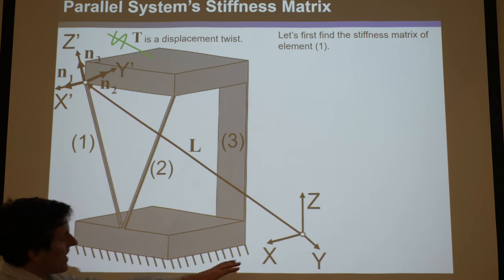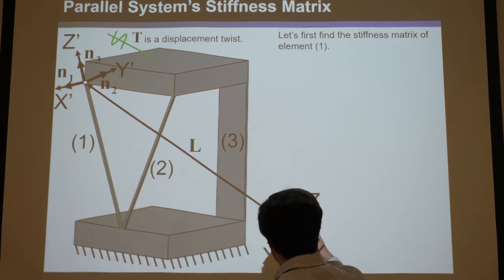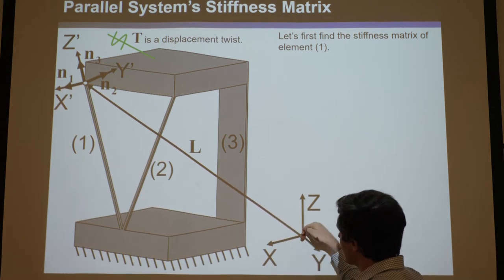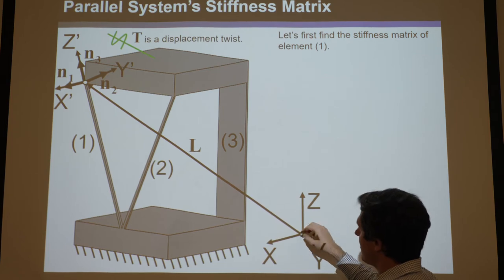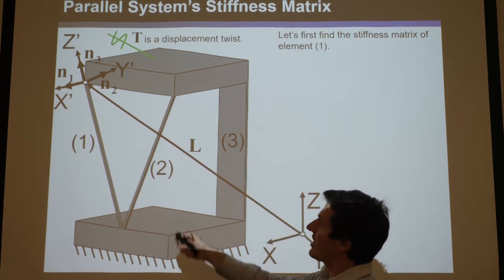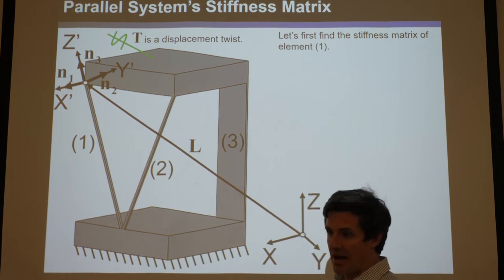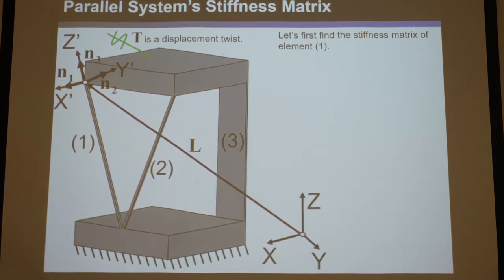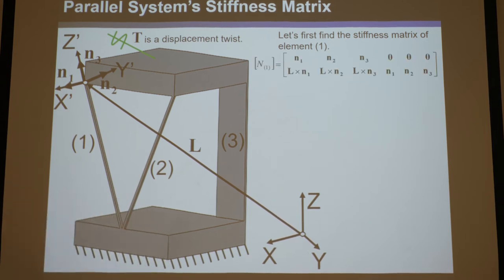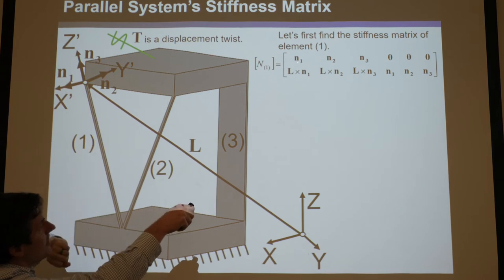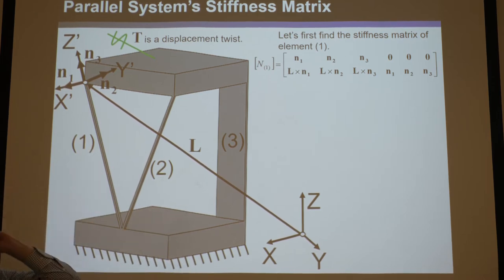N1 corresponds to x-prime, n2 to y-prime, and n3 to z-prime, all defined with respect to the global coordinate system. You then construct a transformation matrix N for element 1 — if this doesn't look familiar, review lecture 2, which explains how to structure this transformation matrix.